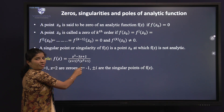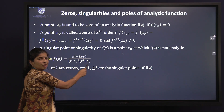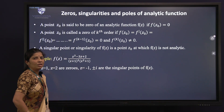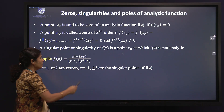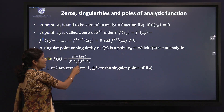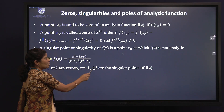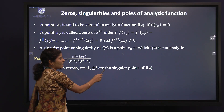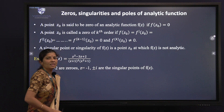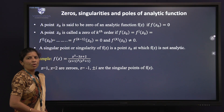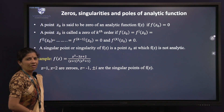Similarly, if we equate the denominator to 0, we get z = -1 and z = ±i, and these are the singular points of f(z).